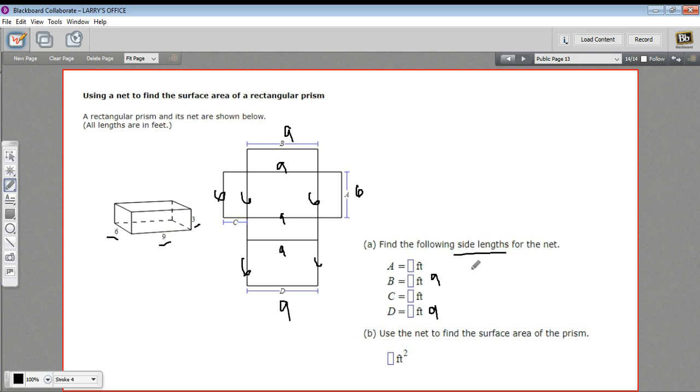And then the shortest side, C. So A was six, C is three. So all of these short sides are three, including these sides here and here.